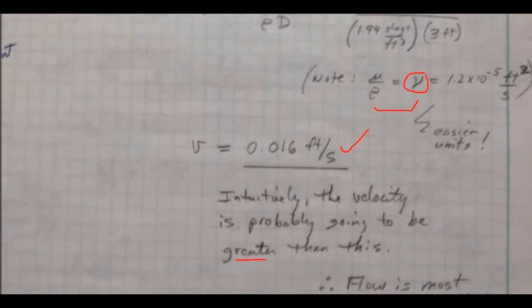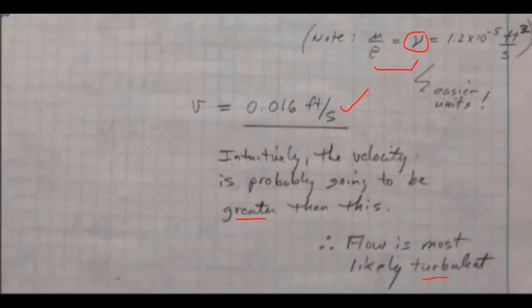So that would mean it's greater than the cutoff, and therefore the flow is most likely turbulent. So that's all there is to that problem. See if you can think your way through it and if it makes sense to you.